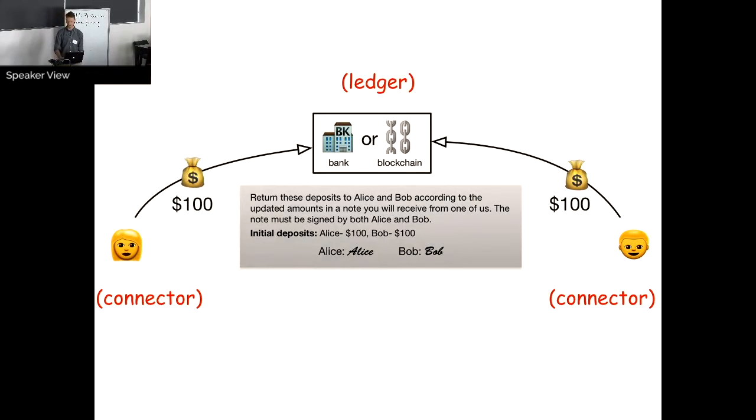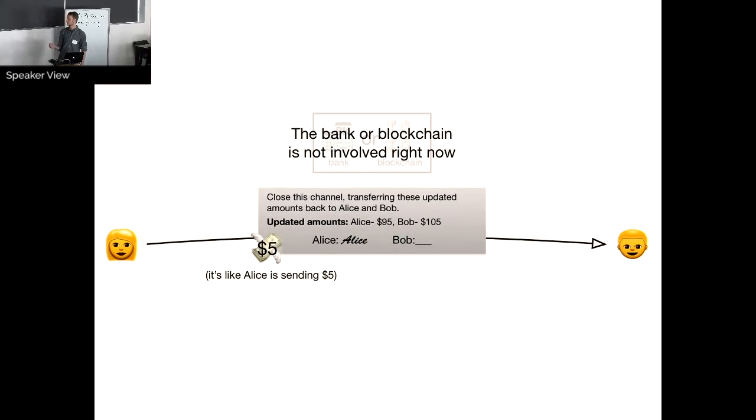I'm just going to explain it quickly with some nice diagrams. I've actually on this slide labeled this with Interledger terms, and maybe I'll change the terms in my white paper and code as well for consistency. But Alice and Bob here can both be considered connectors, and the ledger is a bank or a blockchain. So how it works is Alice and Bob, they go to the bank, and they each deposit $100 into an escrow account. They say to the bank, give this money back to us when you get a note that's signed by both of us, and this note is going to have updated amounts on it. So you can see they have initial deposits, they sign this, it's all certified.